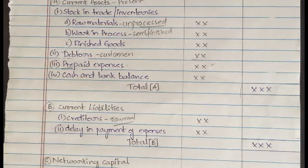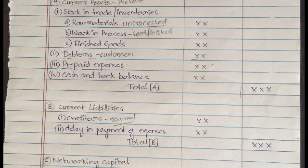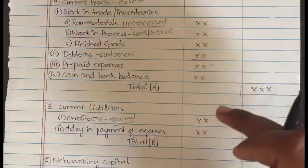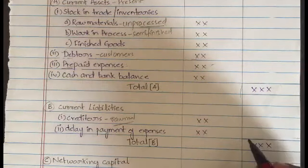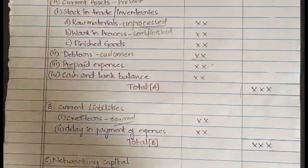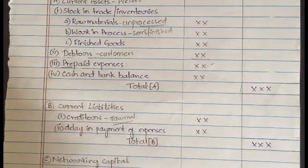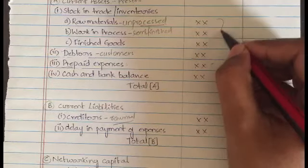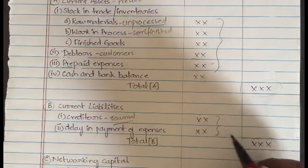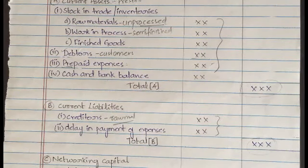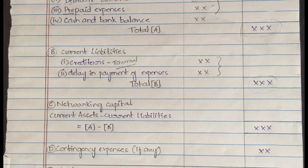The next is delay in payment of expenses — all the expenses like paying wages, paying salaries, maintenance cost, all those costs will come under delay in payment of expenses. They will also have some amount and they will be added up. The total is called as total of part B, which is the sum of all the current liabilities, denoted by B, equal to some amount. The amount for part A is the sum of all current assets, and part B is the sum of those two liability items.